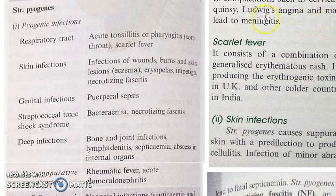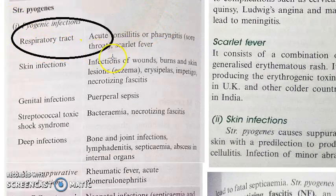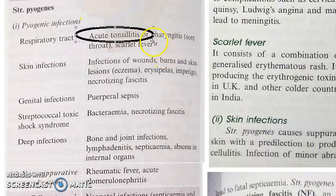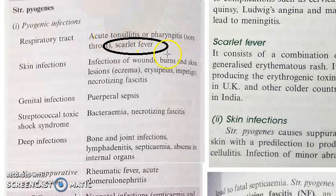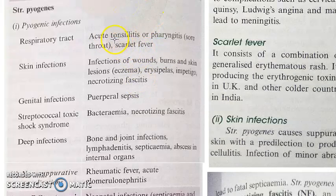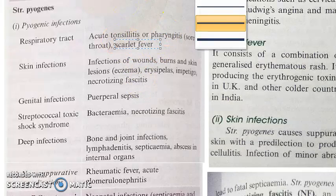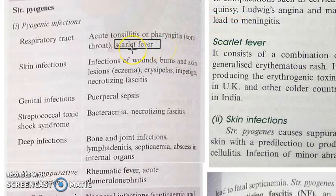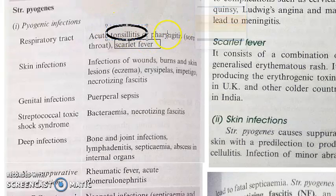Streptococcus pyogenes causes pyogenic infections, meaning pus-forming infections. It causes acute tonsillitis, pharyngitis, sore throat, and scarlet fever. You should not forget that scarlet fever is caused by streptococcus. This is something to do with the respiratory tract — tonsillitis, pharyngitis, and scarlet fever.